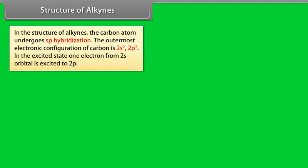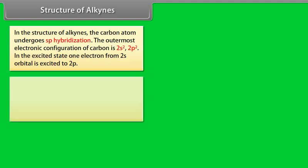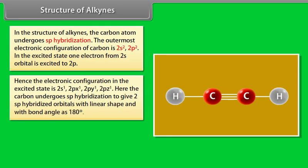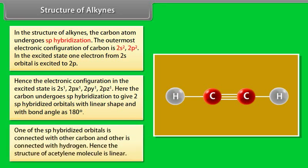Structure of alkynes: in the structure of alkynes, the carbon atom undergoes SP hybridization. The outermost electronic configuration of carbon is 2s2, 2p2. In the excited state, one electron from the 2s orbital is excited to 2p, giving the electronic configuration 2s1, 2px1, 2py1, 2pz1. Here, the carbon undergoes SP hybridization to give 2 SP hybridized orbitals with linear shape and a bond angle of 180 degrees. One of the SP hybridized orbitals is connected with the other carbon and the other is connected with hydrogen. Hence, the structure of the acetylene molecule is linear.